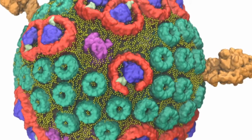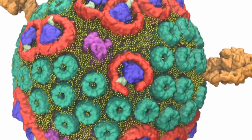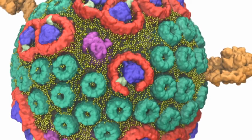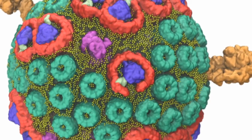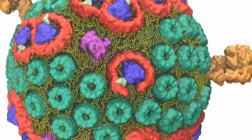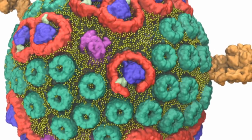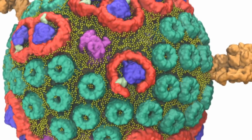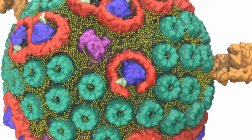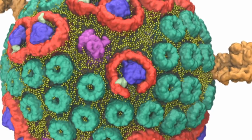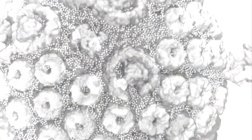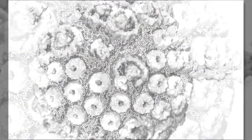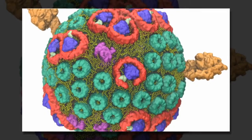In 2014, a team led by Schulten used the Titan supercomputer, located at the U.S. Department of Energy's Oak Ridge National Laboratory, to construct and simulate a single chromatophore.